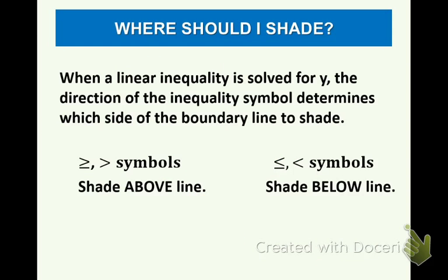This is basically a summary of what we talked about yesterday in day one. When a linear inequality is solved for Y, which means Y is by itself, the direction of the inequality symbol determines which side you're going to shade from the boundary line.